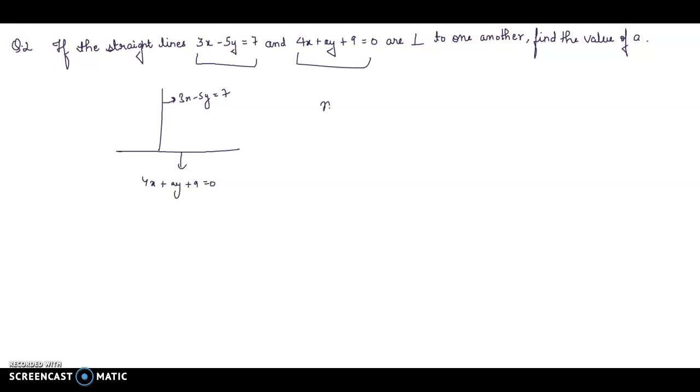We have this condition M₁ × M₂ = -1 for two lines that are perpendicular to each other. I will find out the slope of the first straight line, that is 3x - 5y = 7. We have this formula for slope, that is -a/b. First I will write it 3x - 5y - 7 = 0.